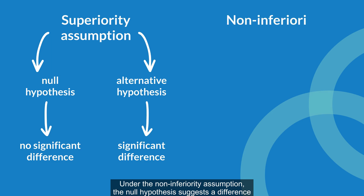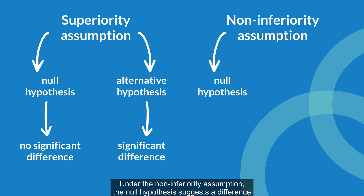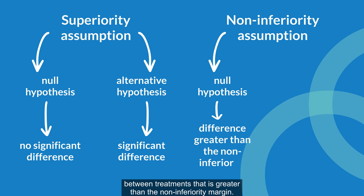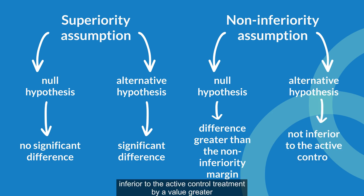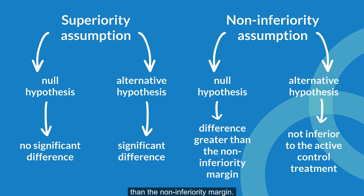Under the non-inferiority assumption, the null hypothesis suggests a difference between treatments that is greater than the non-inferiority margin. In contrast, the alternative hypothesis suggests that the new treatment is not inferior to the active control treatment by a value greater than the non-inferiority margin.